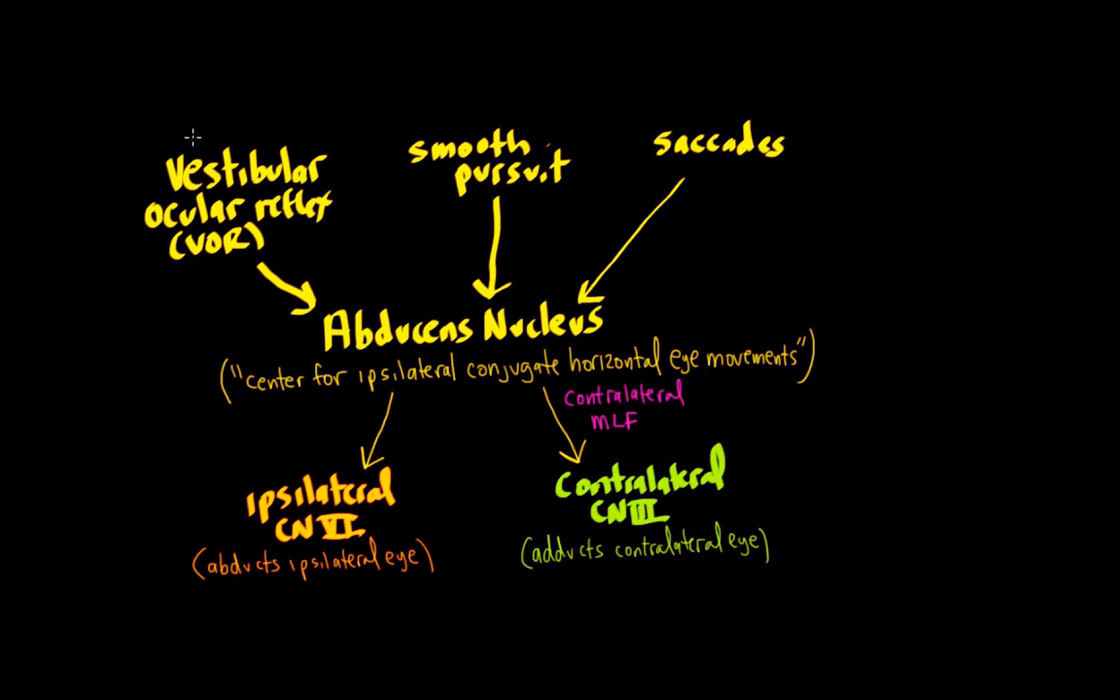So let's put in the major components of each. We have the horizontal semicircular canals, cranial nerve 8, the vestibular division, and the vestibular nuclei as important parts of the VOR.